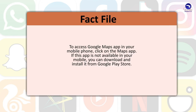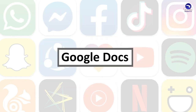Fact File: To access the Google Maps app on your mobile phone, click on the Maps app. If the app is not available on your mobile, you can download and install it from the Google Play Store.